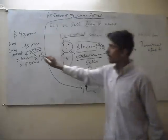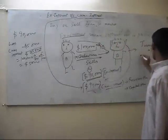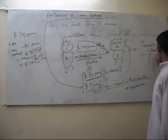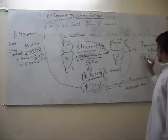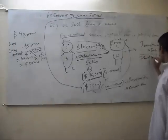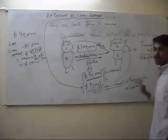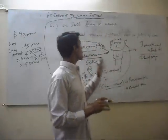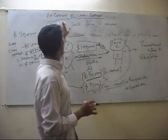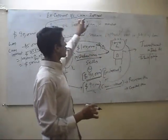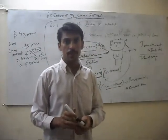And we add $85,000 to bank. I think you understand Ex-Interest and Cum Interest. Thank you very much.